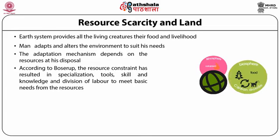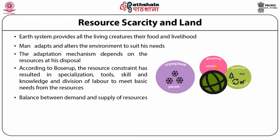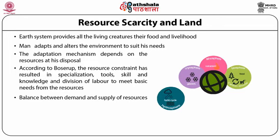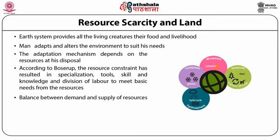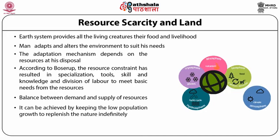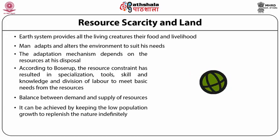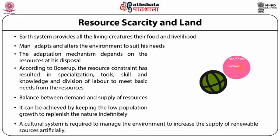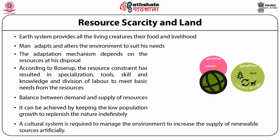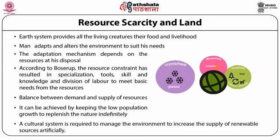The successful association between man and environment depends on the balance between man's demand and the environment's ability to supply resources. This balance could be achieved by keeping population growth low to replenish nature indefinitely. Otherwise, a cultural system is required to manage the environment and increase the supply of renewable resources artificially.